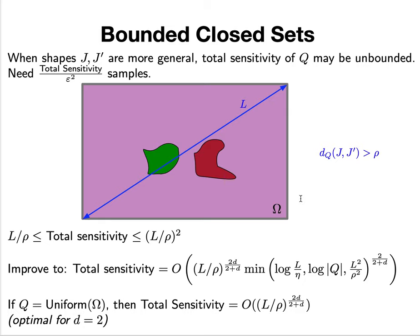We can improve the total sensitivity with more careful analysis - this is the technical bulk of the paper - to something pretty close to just L/ρ. In two dimensions, this is basically L/ρ times these terms, which in the worst case is another L/ρ term, but in most cases has some logarithmic dependence.